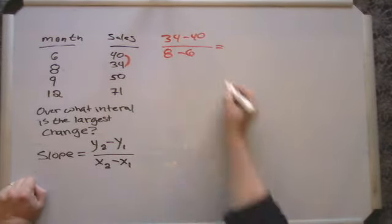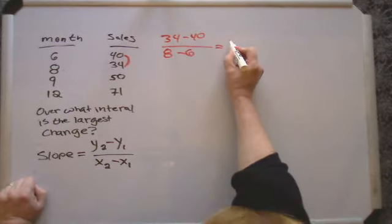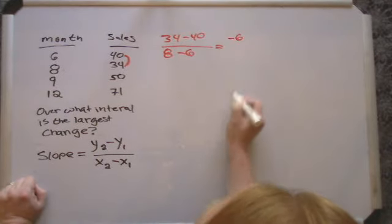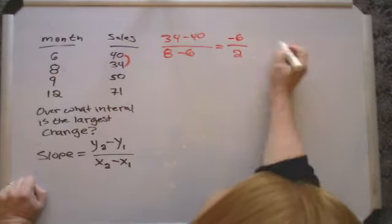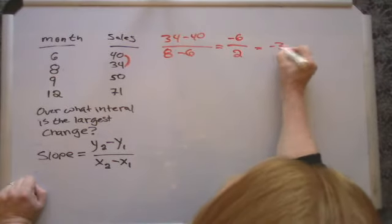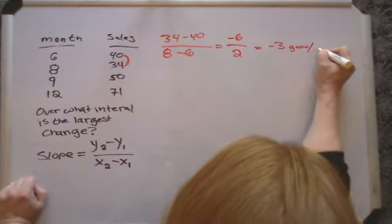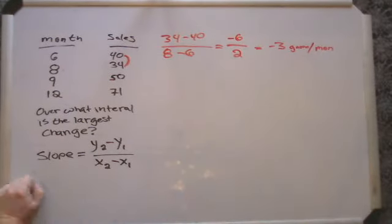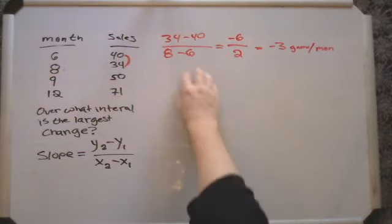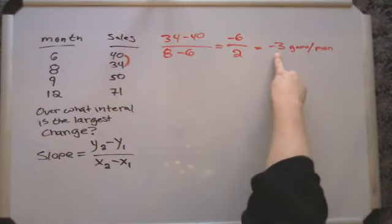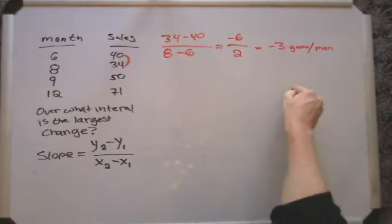So that gives me, let's see, I've got negative 6 divided by 2, or a change of negative 3 game consoles per month. So over that two-month period, we actually sold less games each month. We were seeing a downward trend. Negative numbers indicate a downward slope.